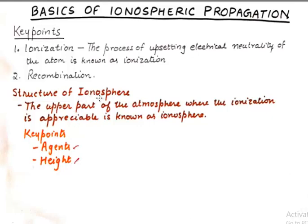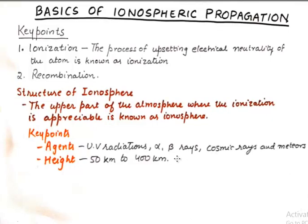When we define the structure of the ionosphere, we first define what agents cause ions to form — like UV radiations, alpha rays, beta rays, cosmic rays, and meteors. They cause the electrical neutrality of the atom to be upset, producing positive ions and free electrons. The height of the ionosphere ranges from 50 kilometers to 400 kilometers.